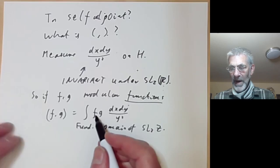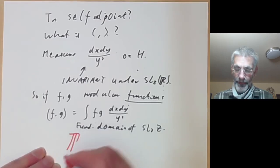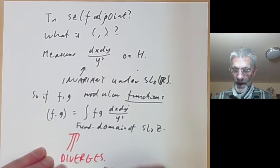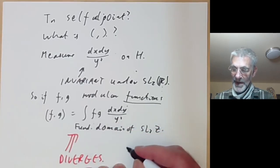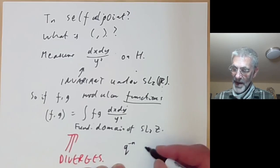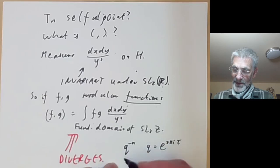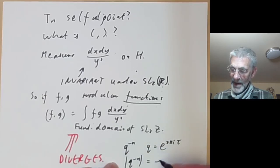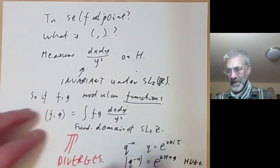This is going to be a bilinear map. However, there is a problem: this integral appears to diverge wildly. For example, if f is the j-function, then f times g will typically have a term q^{-n} for some n, and since q = e^{2πiτ}, the absolute value of q^{-n} is e^{2πny}, which is huge as y becomes large. In other words, this integral doesn't seem to converge.